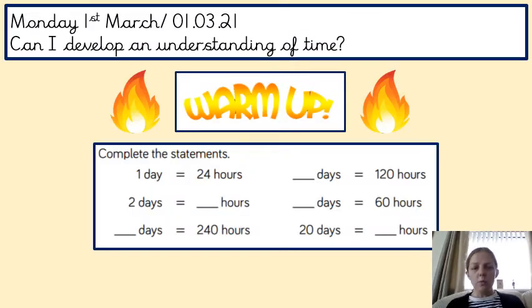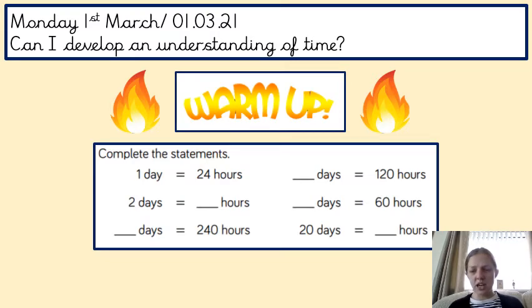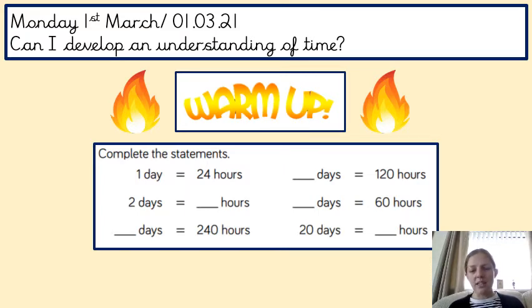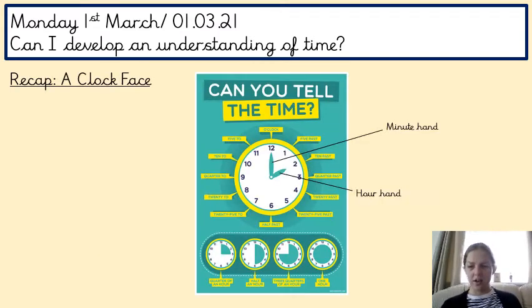Just to warm you up, a very similar activity to the one you did the other day when you were looking at time — just have a go at completing these statements, getting used to the multiplication again. One day is the same as 24 hours. If one times 24 is 24, what's two times 24 going to be? So you're doing conversion from days into hours or hours into days, and you're going to fill in the blanks to complete the statements.